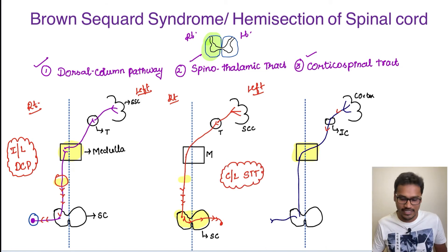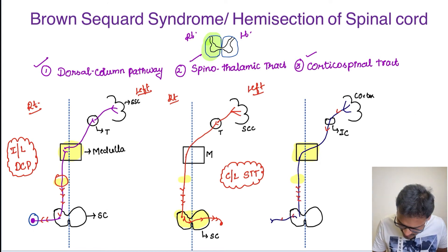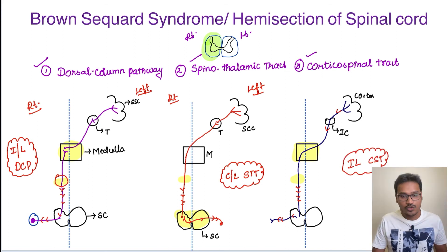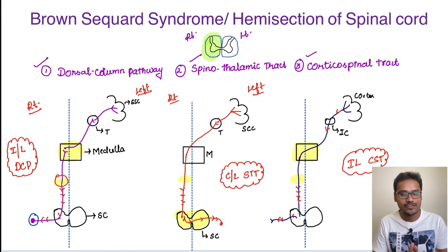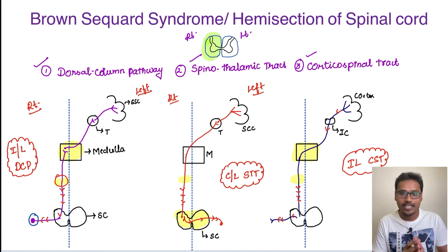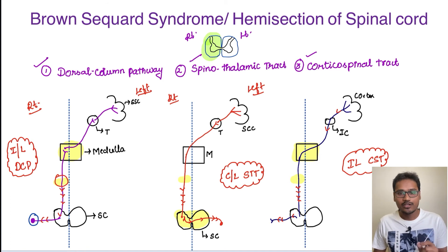There is a lesion at the spinal cord level — this is hemisection of the spinal cord. The lesion is on the right side, and the neural defect is also on the right side. This shows us that the ipsilateral corticospinal tract is affected. So we have two ipsilateral pathways affected and only one contralateral side affected. Whenever there is hemisection of the spinal cord, only the spinothalamic tract is affected contralaterally. Whatever sensations are carried by the spinothalamic tract will be affected on the contralateral side; everything else will be affected on the side of the lesion.